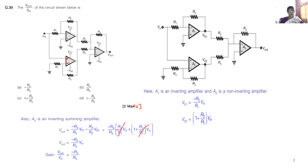From this, the overall gain is V_out by V_in = -(R4/R3). This is the answer for this problem. Thank you. Have a nice day.